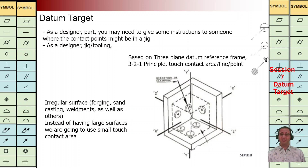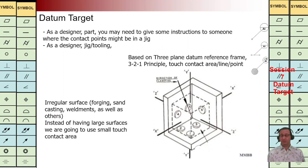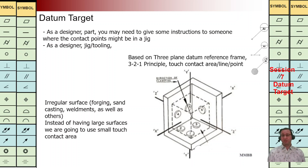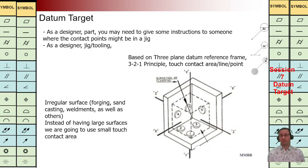Hello everyone, good to see you again. In this session we want to talk about datum targets. After making a component we need to do measurement, we need to control the component. In this situation we need to fix the component. As we have learned so far, we can implement three reference planes to eliminate all six degrees of freedom and fix the component. In reality, whenever we are going to fix a component we need to use some tools such as fixtures, jigs, and so on.